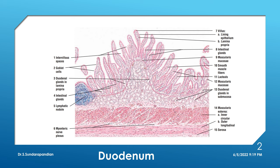Next is the muscularis externa — inner circular and outer longitudinal muscle coat. Outer to that we have the serosa. If that section is covered with peritoneum, that will be serosa; otherwise, if the section is taken in the anterior wall not covered by peritoneum, it will be adventitia. So these are the features of duodenum.